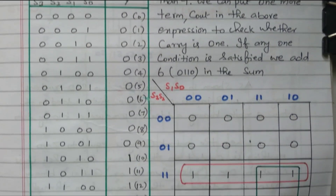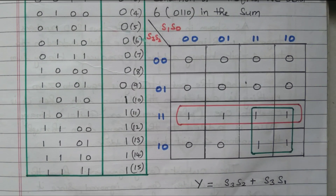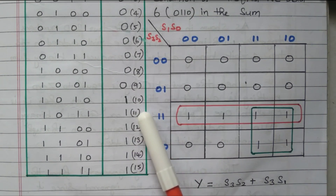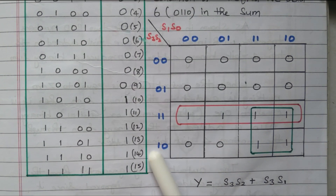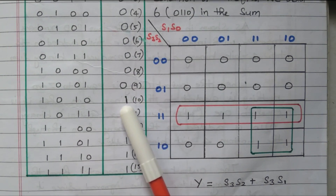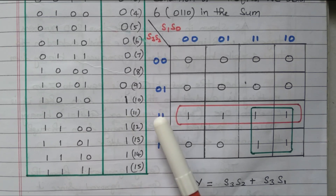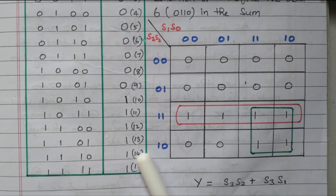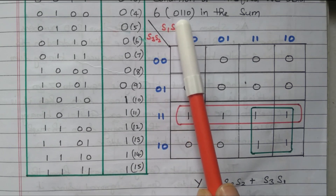For greater than nine — that is 10, 11, 12, 13, 14, 15 — two digits are there: one is represented as BCD separately and zero is represented as BCD separately. So for these cases, we are adding six: 0, 1, 1, 0 is added, and that gives us the final answer.